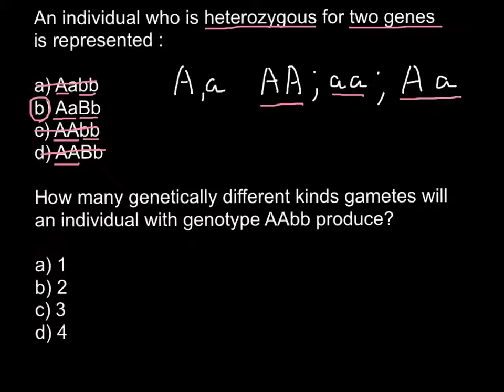And the next question: how many genetically different kinds of gametes will an individual with genotype capital A, capital A, small b, small b produce? In order to answer this question, let me draw this genotype. So this is going to be capital A, capital A, small b, small b. And it's very easy — you just have to use the rule.